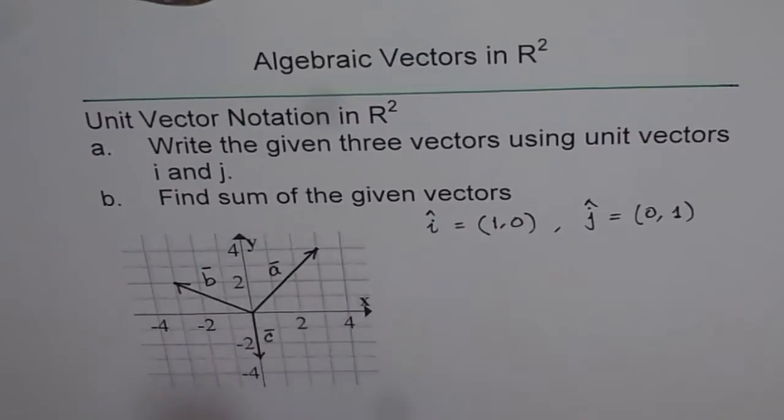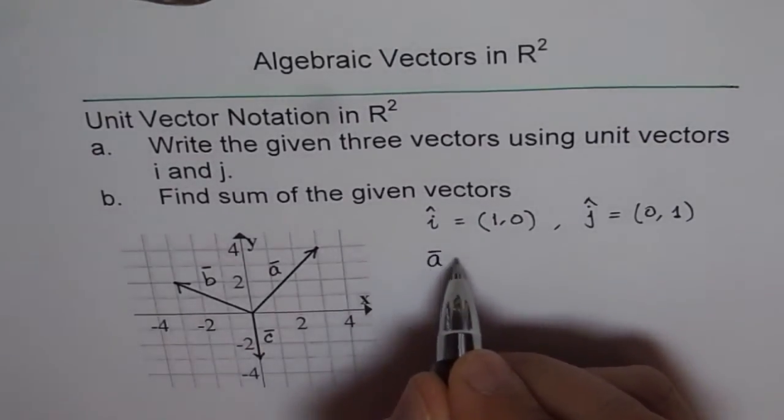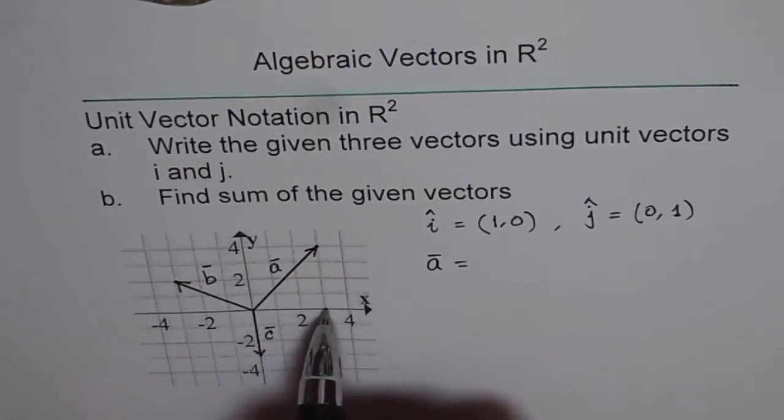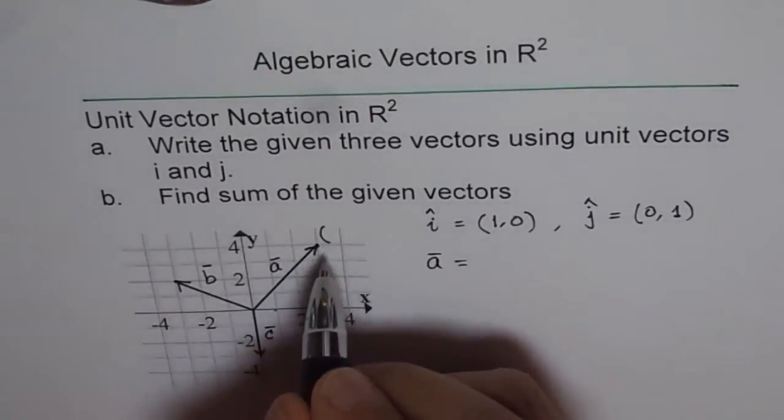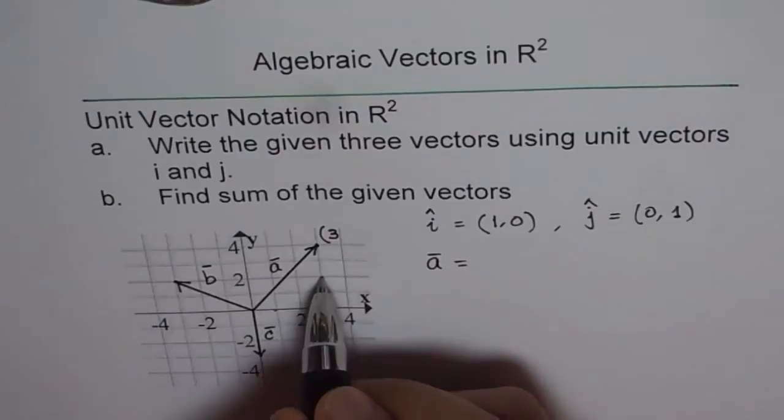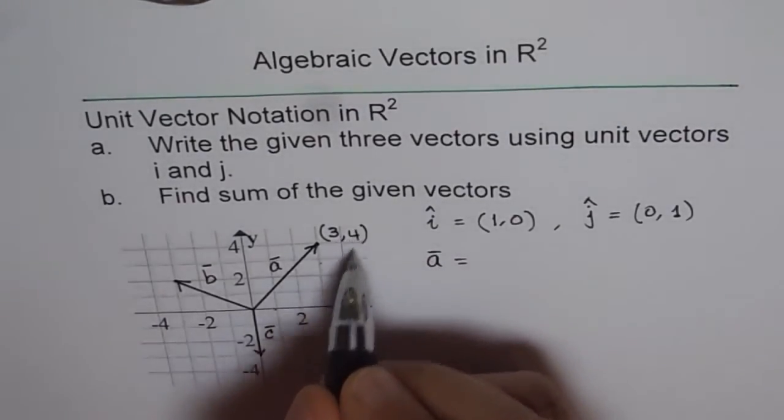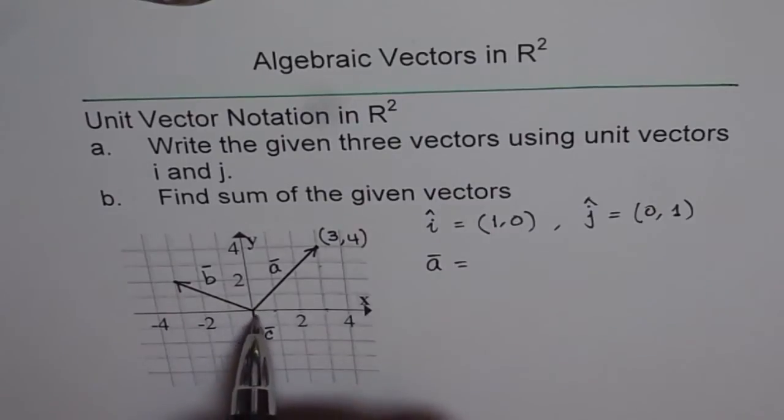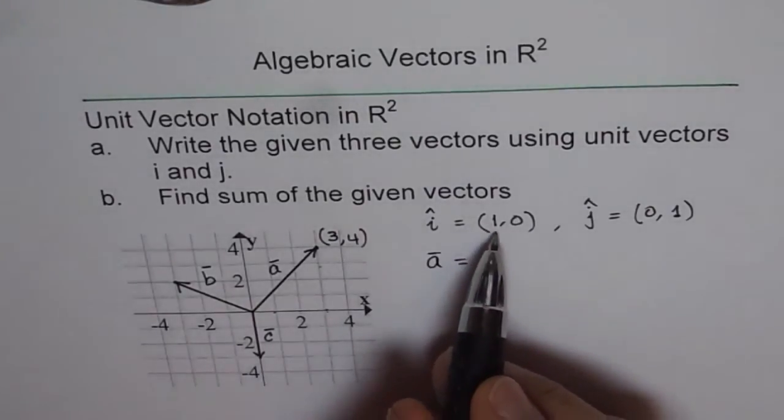Now let's consider vector A. So when we say vector A, what is the component of vector A along the x-axis? The coordinate for this point is 3 along the x-axis and 4 along the y-axis. That means we can write scalar multiple of i. So 3 times i. So 3 times i gives us this direction. 3 times (1, 0) will give us the component of A along x-axis.